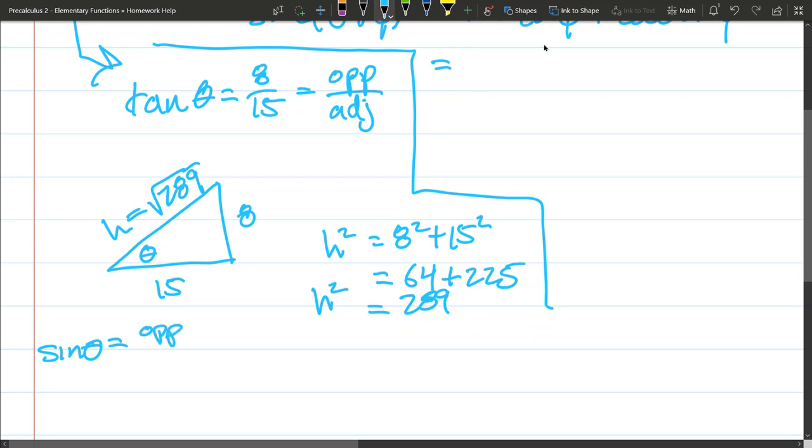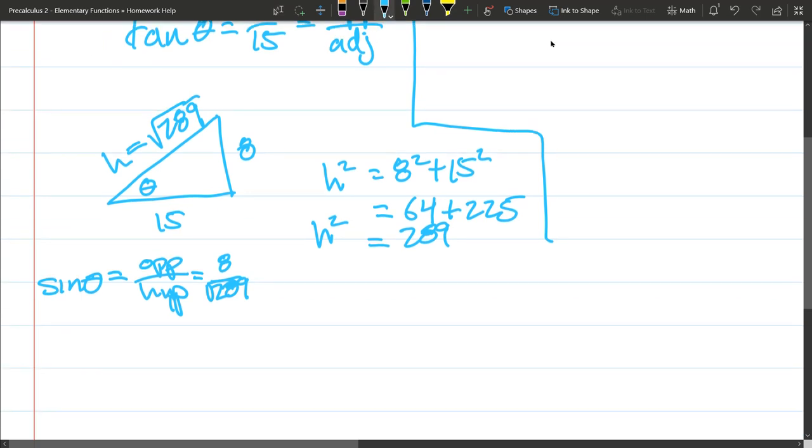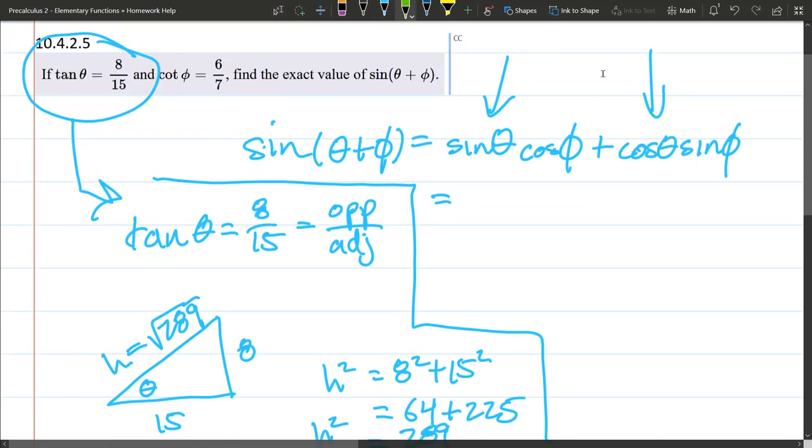I just have to put it together the right way. Sine is opposite over hypotenuse. And just looking here, opposite 8, hypotenuse square root 289. And we can also get cosine theta, adjacent over hypotenuse. So that's 15 over square root 289. Now what we have done is found the values for the trig functions of theta.